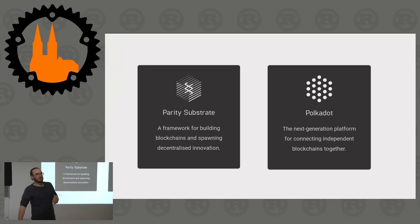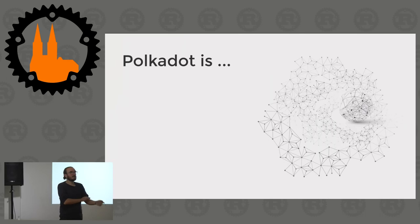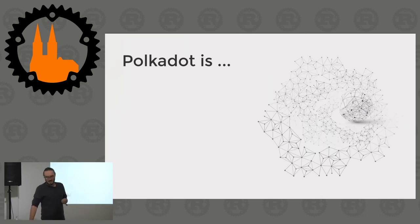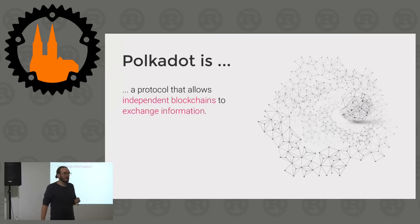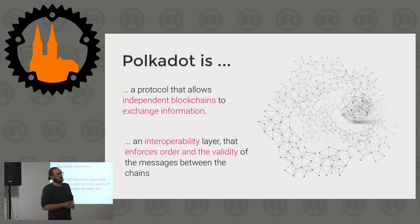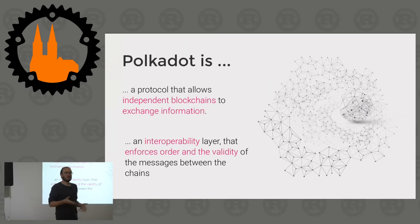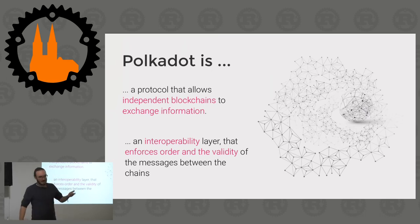In order to understand why we do what we do and why it is necessary, I would like to briefly talk about Polkadot. Polkadot is the idea that there are plenty of blockchains out there. It is a project by the Web3 Foundation to create a protocol that allows blockchains to talk with one another - generally exchange messages, not only tokens but any type of message. It is meant to be an interoperability layer that enforces order and validity of those messages, unlike TCP where order is not guaranteed.